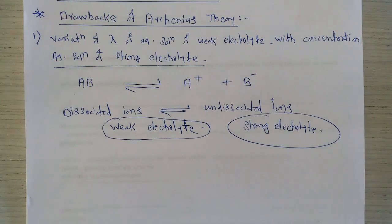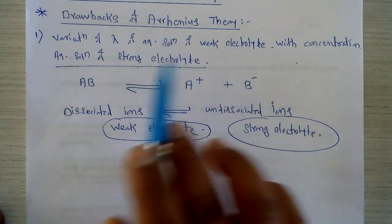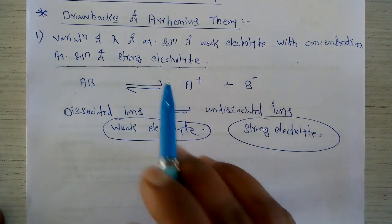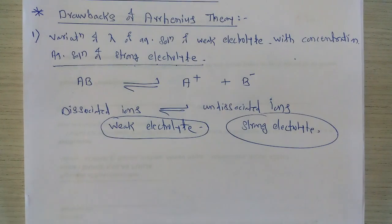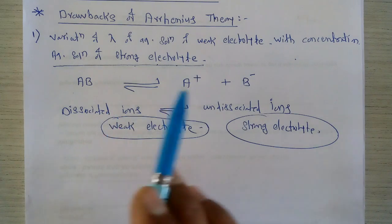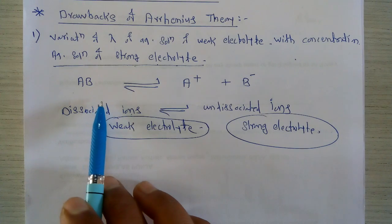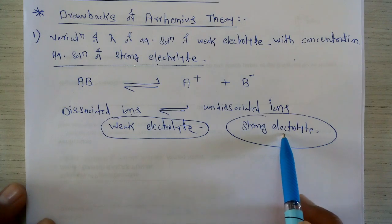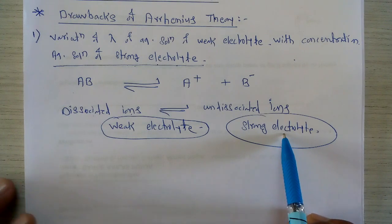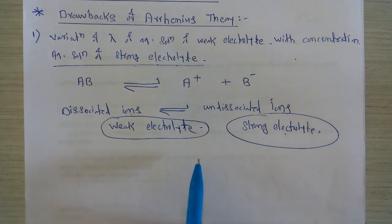So this is the first important drawback of Arrhenius theory: it can explain the variation of equivalent conductance of aqueous solution of a weak electrolyte with concentration, but it fails to explain the equivalent conductance of aqueous solution of a strong electrolyte. This is because the weak electrolyte shows an equilibrium between dissociated and undissociated ions due to partial ionization, while the strong electrolyte is already dissociated to a maximum extent.